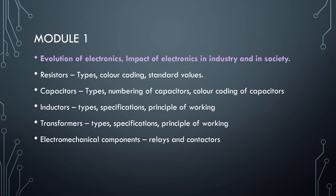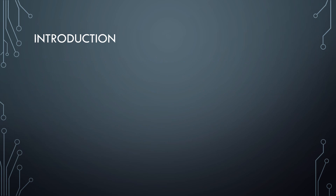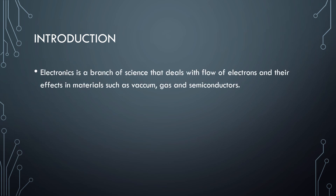Electronics is a branch of science which deals with the flow of electrons and their effects in materials such as vacuum, gas, and semiconductors. This branch deals with the flow of electrons in materials such as vacuum, gas, and semiconductors. It is an offshoot of electrical engineering.